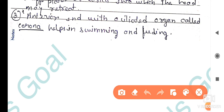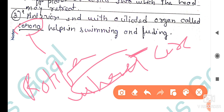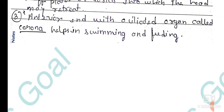The anterior end has a ciliated organ called the corona. It is called Rotifera because of the corona, which is a wheel-like structure. Rotifera means 'wheel-bearing.' It is a ciliated organ near the head lobe which helps in swimming and feeding.